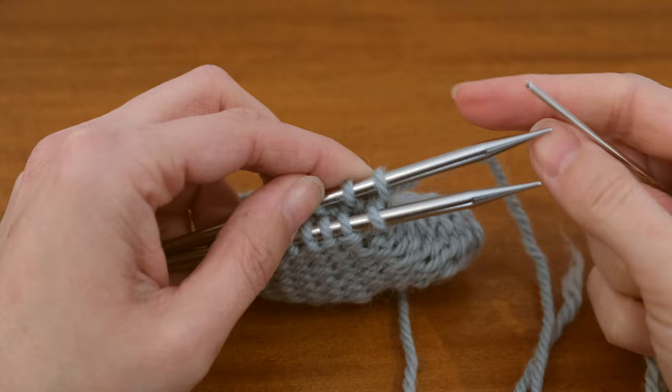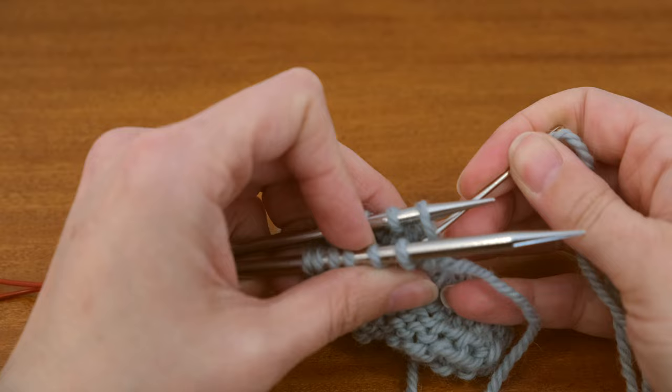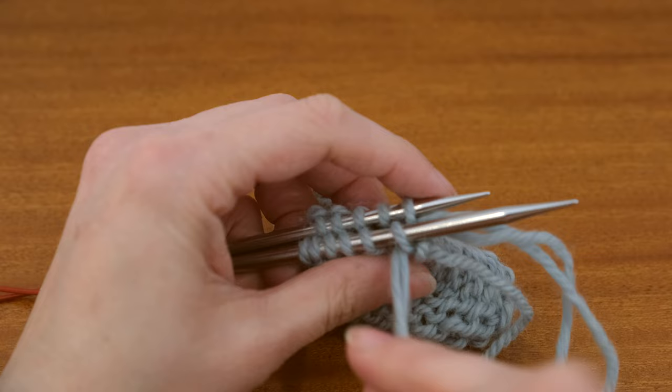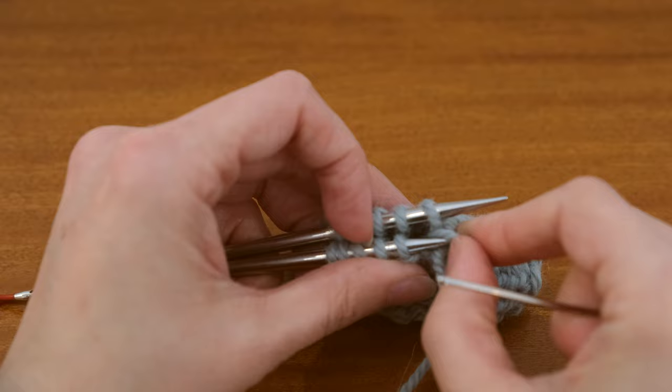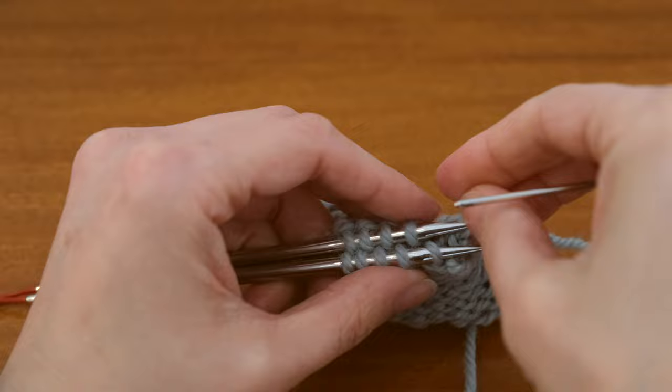Then you're just going to do the same working in the other direction, so coming back towards you through the back and front stitches. Whichever stitch you last went through, that's the one that you slide off. So in this case it's the front stitch, and you just continue working your way across like that.